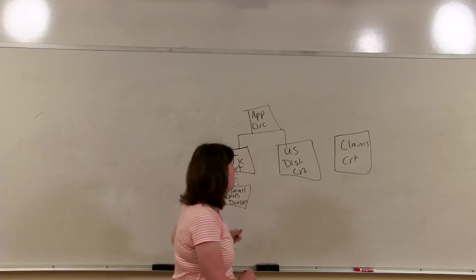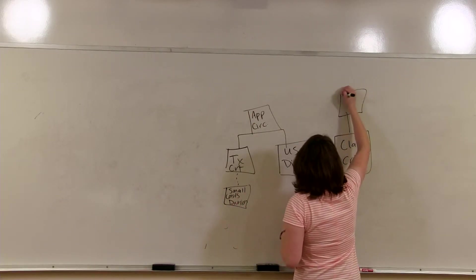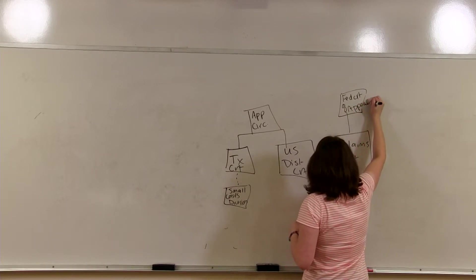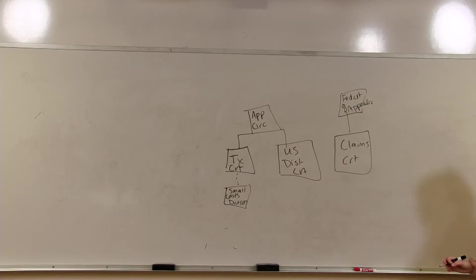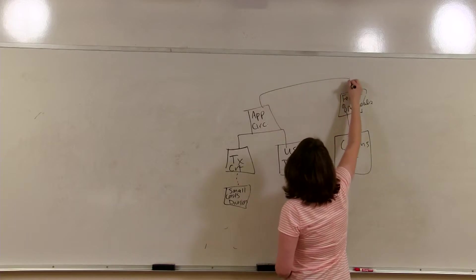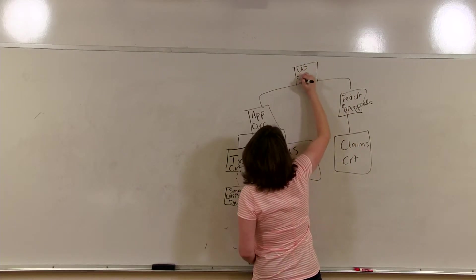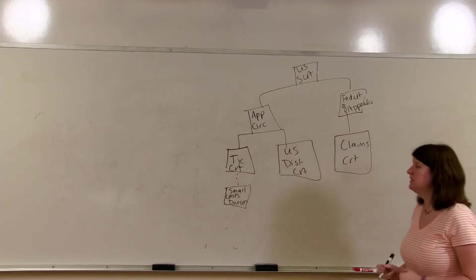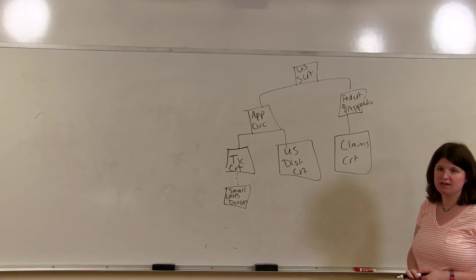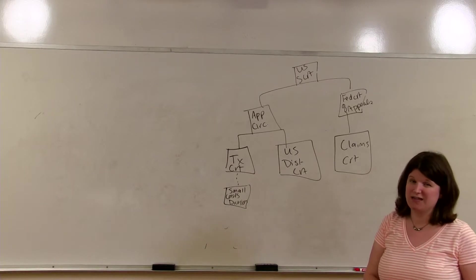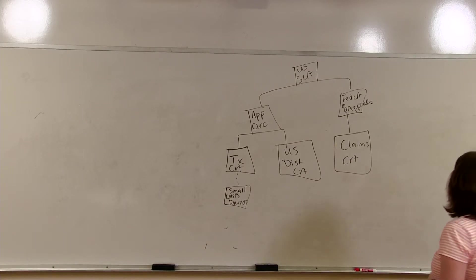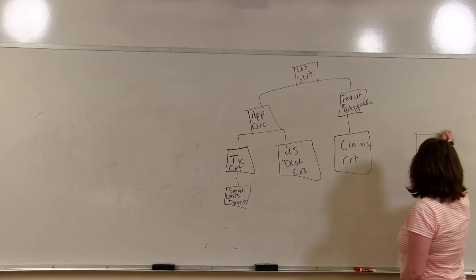Now, the claims court has their own appellate circuit. This is the federal court of appeals, and they actually have their own appeals court. If you don't like the result here or here, your option is to appeal it to the U.S. Supreme Court. Now, the U.S. Supreme Court does not have to take the case if they don't want it. They have the option of taking the case, and the U.S. Supreme Court does not actually take a lot of tax cases.